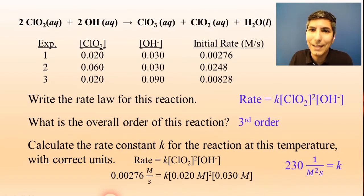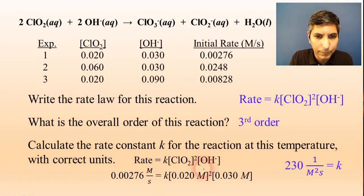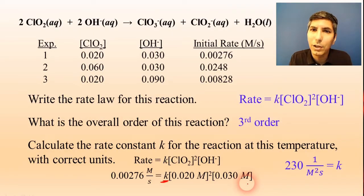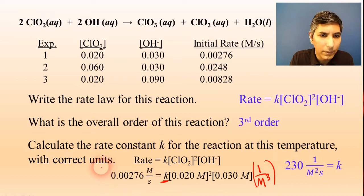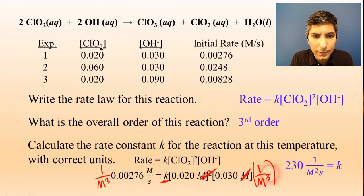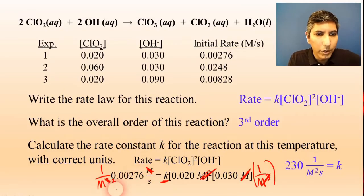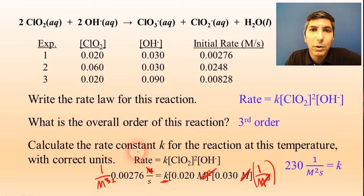The number is easy to calculate, but the units are trickier. When solving for k, we have molarity squared times molarity on the right, which is molarity cubed. To isolate k, we multiply both sides by 1/M³. On the right, the three molarities cancel out. On the left, the one molarity from the rate cancels with only one of those three, leaving 1/(M² · s). So the units of k are M⁻²s⁻¹, and you have to be very careful with how you work the units.